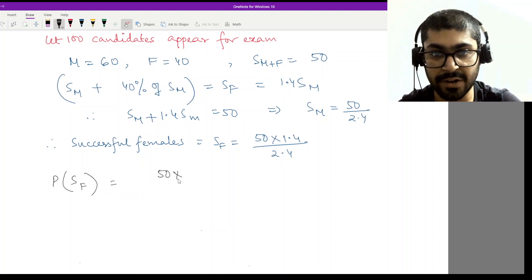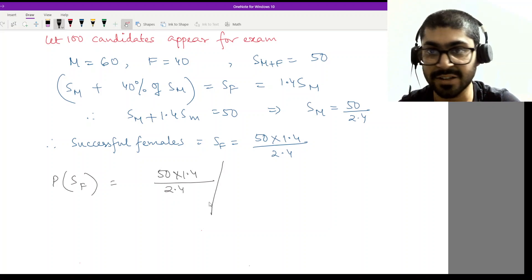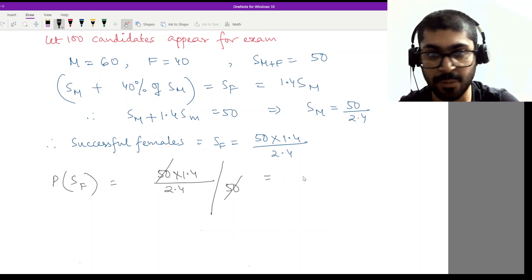That should be equal to 50 times 1.4 by 2.4, and I will divide this entire thing by number of successful candidates, which is 50. So this 50 will cancel and I'll have 1.4 by 2.4, which is 14 by 24. Cancel by 2 and I'll have 7 by 12. So 7 by 12, that option is there in A.